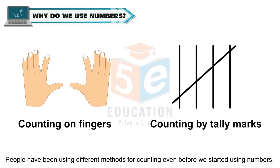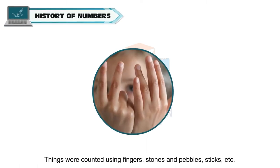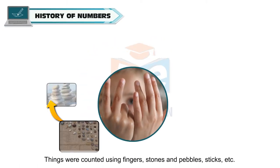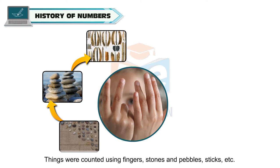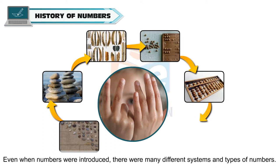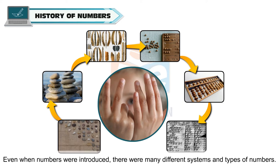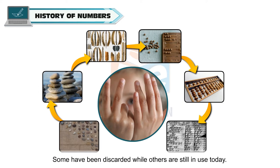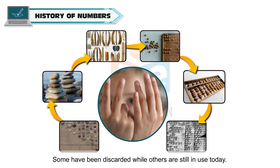People have been using different methods for counting even before we started using numbers. Things were counted using fingers, stones and pebbles, sticks, etc. Even when numbers were introduced, there were many different systems and types of numbers. Some have been discarded while others are still in use today.